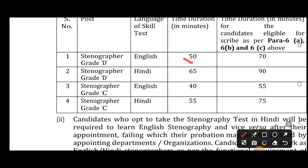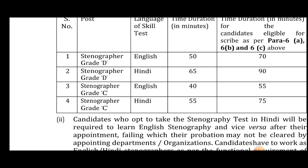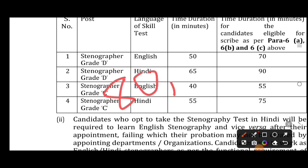You have 50 minutes for the English skill test. The basic skill test for Group D requires typing. You need 80 words per minute typing speed. Group D salary is about 35,000 rupees, and Group C is about 40,000 rupees. Group D requires 80 words per minute and Group C requires 90 words per minute.